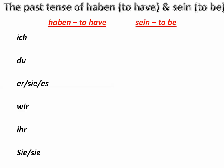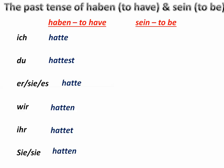Haben, which in the present means 'to have.' In the present tense: Ich habe, Du hast, Er hat, Wir haben, Ihr habt, Sie haben. But if we want to say 'had,' then we need the simple past conjugation: Ich hatte, Du hattest, Er hatte, Wir hatten, Ihr hattet, Sie hatten.